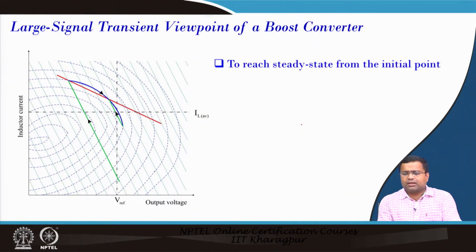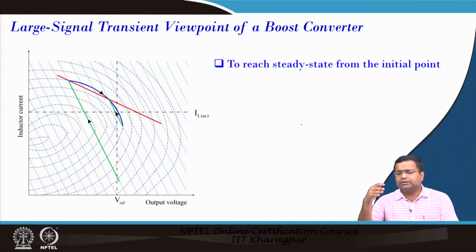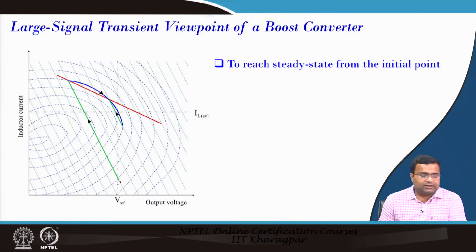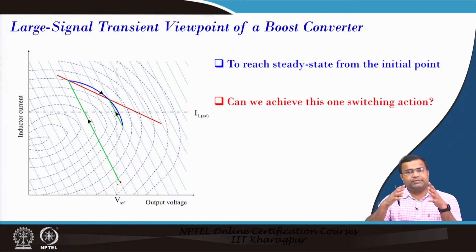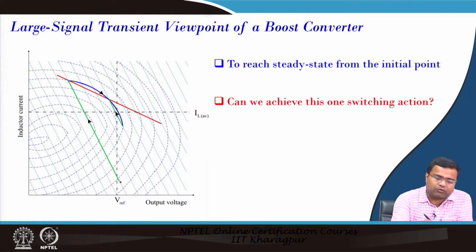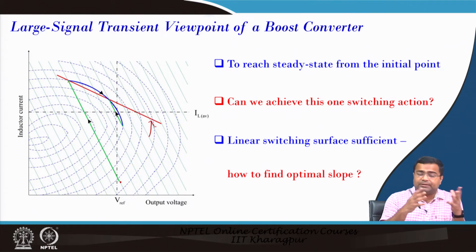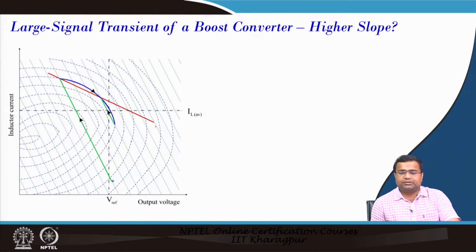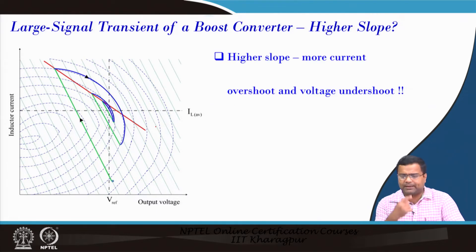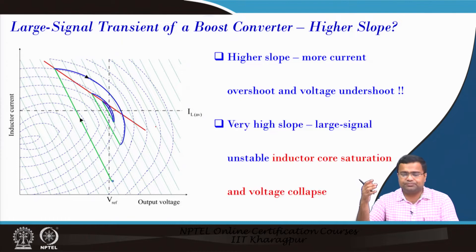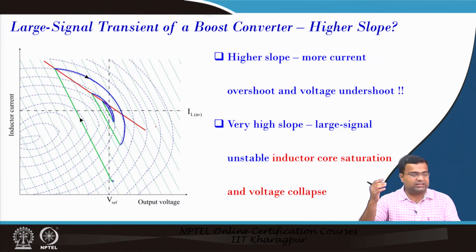To reach steady state from the initial point, can we achieve it in one switching action? Is this surface a straight line, and if so what is the optimal slope? If we increase the slope, there is higher current overshoot and voltage undershoot. At very high slope there can be inductor core saturation or the voltage might collapse.